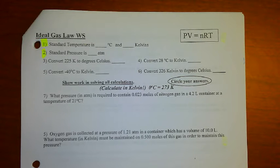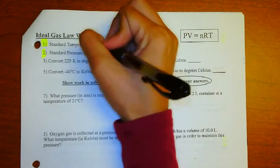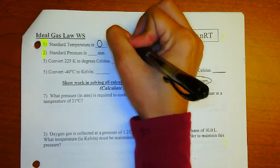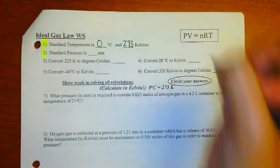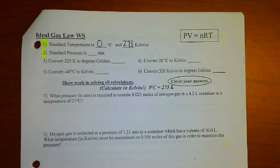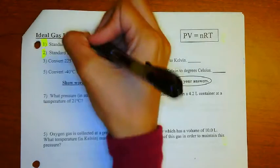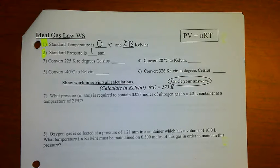Number 1 is asking for the standard temperature, and we know our standard temperature is either 0 degrees Celsius or 273 Kelvin. For number 2 it wants the standard pressure, and that would be 1 atmosphere.